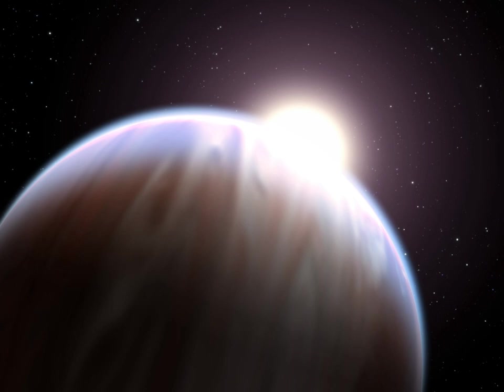The HD 189733 system is the best studied exoplanet system where this effect was thought to occur. In 2008, a team of astronomers first described how as HD 189733 b reaches a certain place in its orbit, it causes increased stellar flaring in its host star.